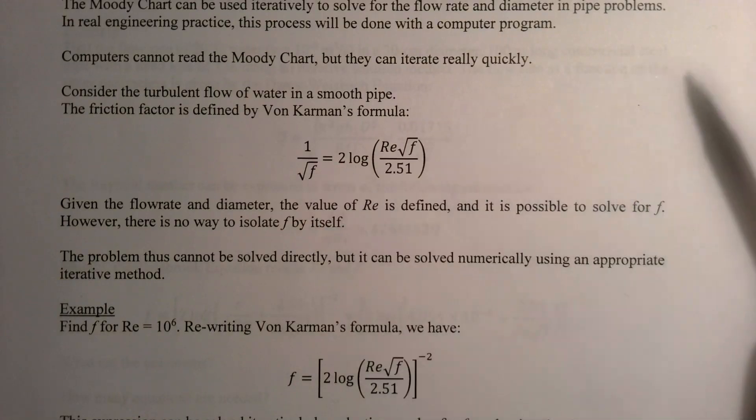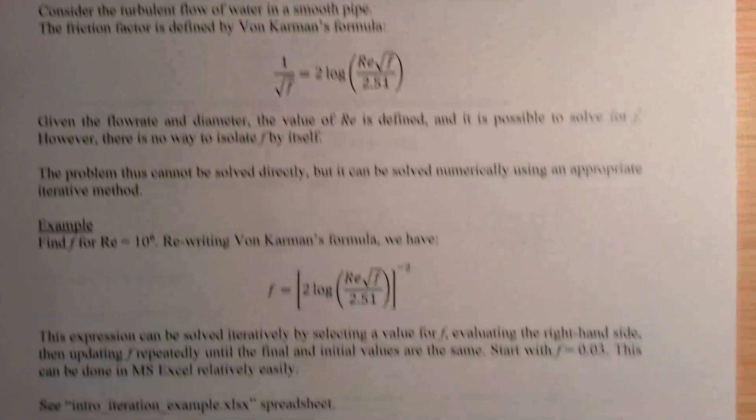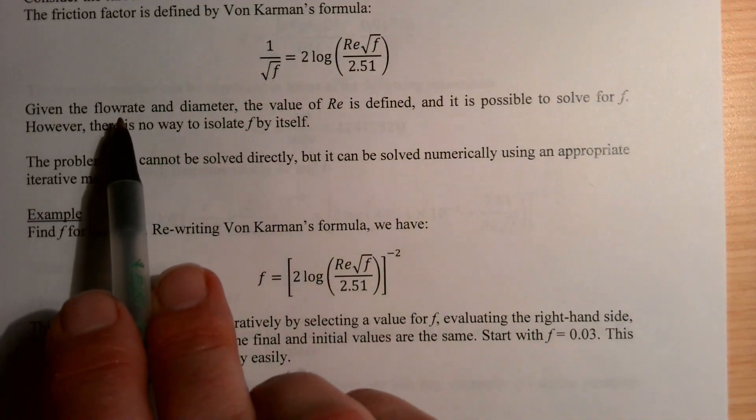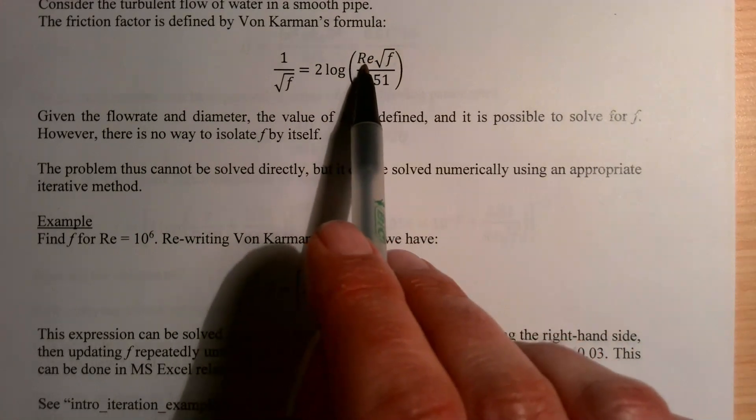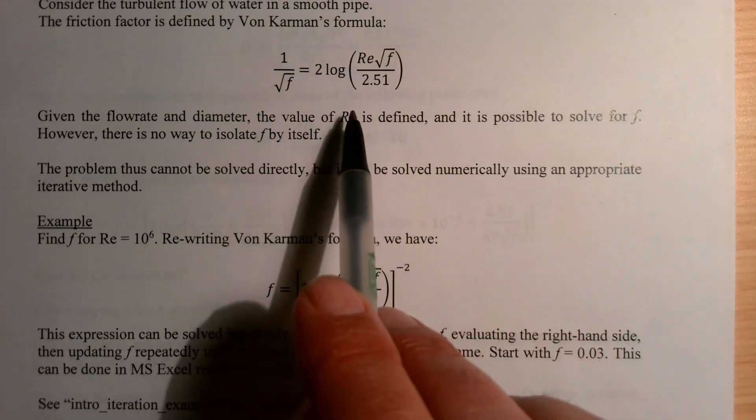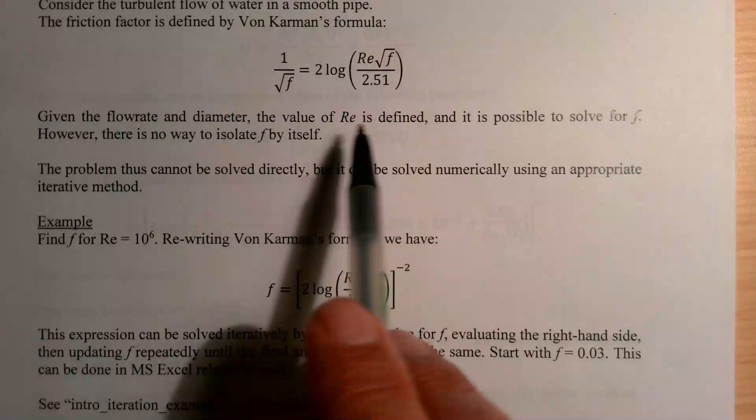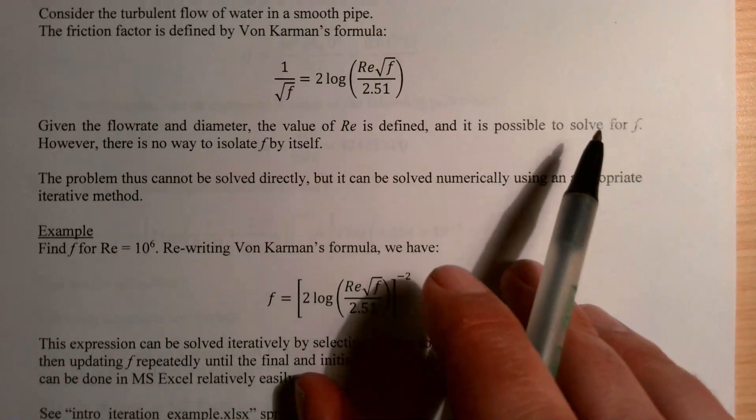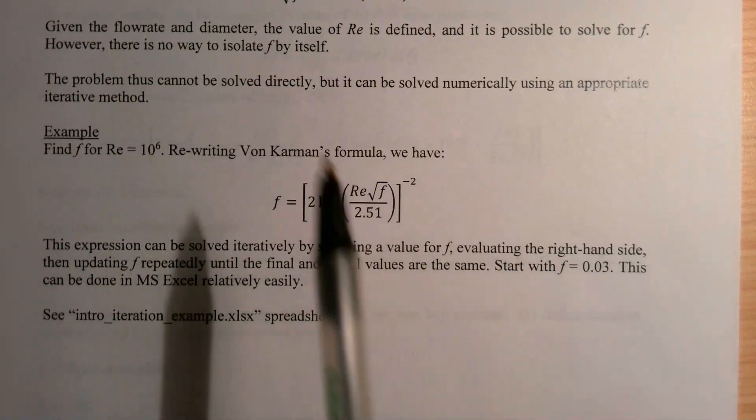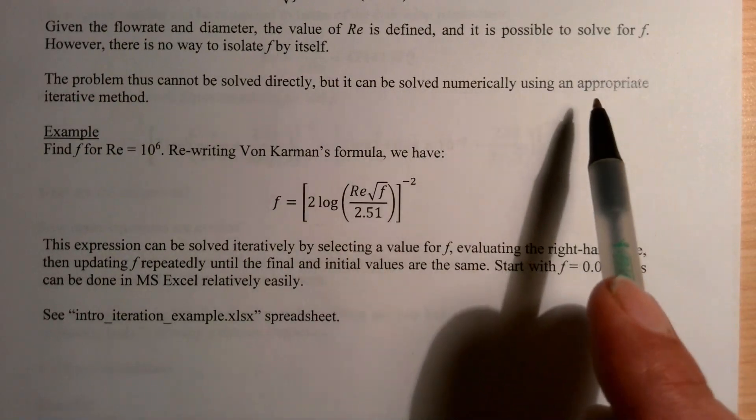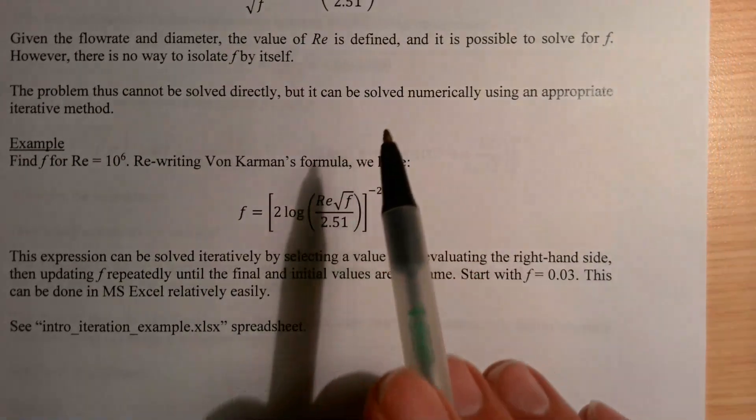Even though there's an exact solution, it can't be determined—there's no way to do that. So if we have the flow rate and the diameter, then we can determine the value of the Reynolds number. The other variable here in this formula is the Reynolds number, and it depends on the flow rate and the diameter. Then it becomes possible to solve for f, but there's no way to get f by itself, so we can solve this numerically.